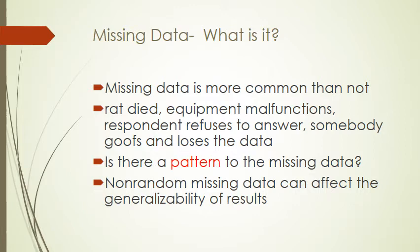If you're doing animal studies, you might have the rat died. If you are using equipment, it's not uncommon that equipment might malfunction — you were trying to get blood pressure, but the blood pressure machine didn't work properly that day. If you're asking your participants to answer questions, they might refuse to answer or skip questions on a questionnaire. Or occasionally, someone in the research lab will goof up and lose the data or collect it improperly.